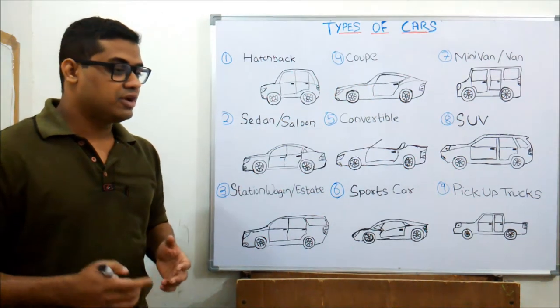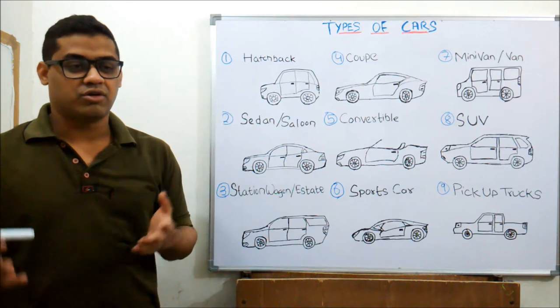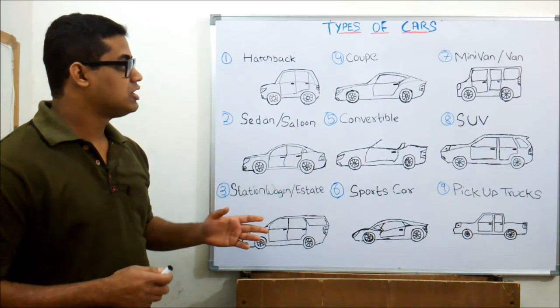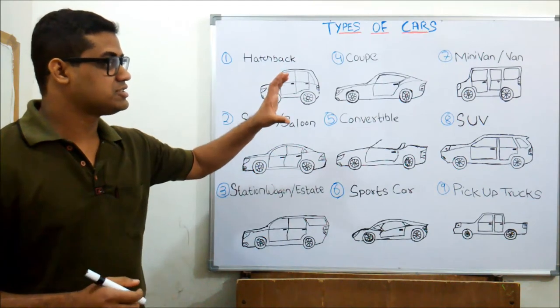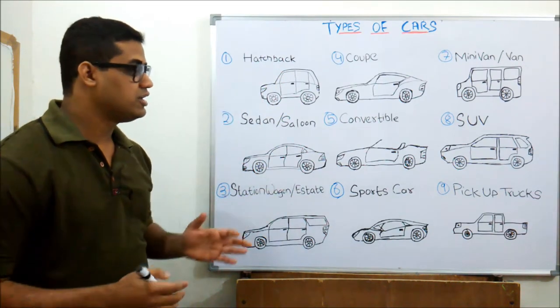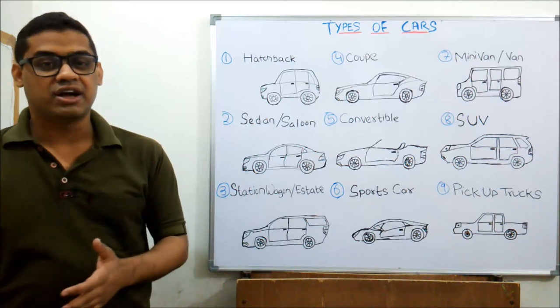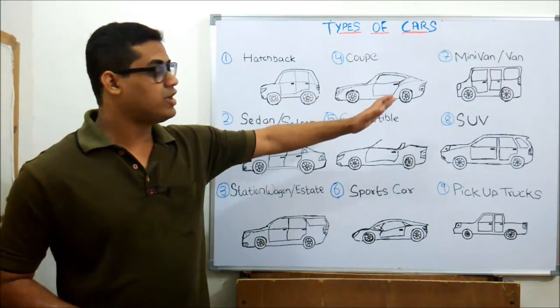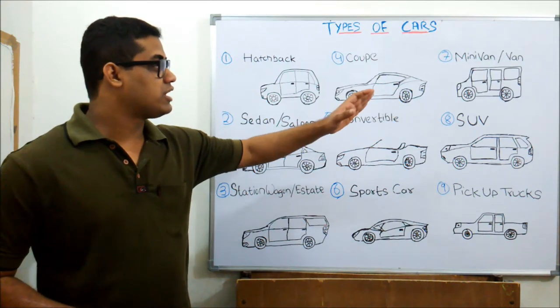If you have that kind of requirement you need a minivan or a van. Examples in India - you have Maruti Omni or Maruti Eco. If you go for more powerful vans, it's a basic categorization so don't go that deep into it - you can say Maruti Ertiga or Honda Mobilio.